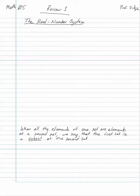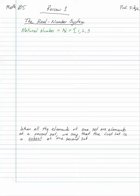Let's review all the sets. We have the natural numbers — the set that you use for counting: 1, 2, 3, 4, 5, 6, and so on. We use the symbol N with an extra line on it.